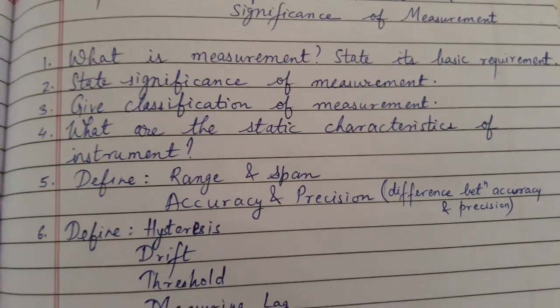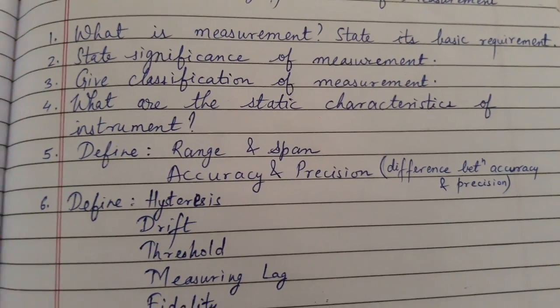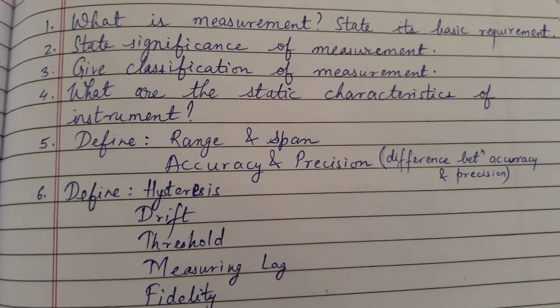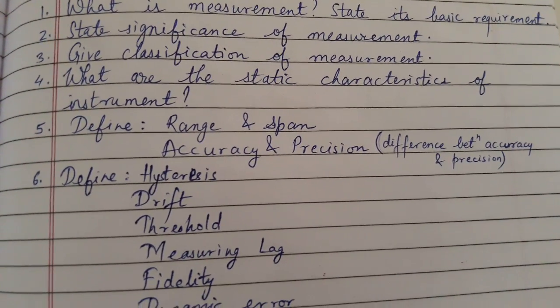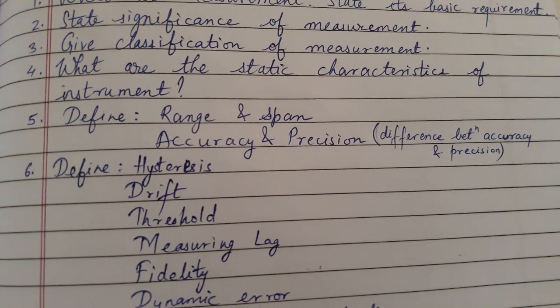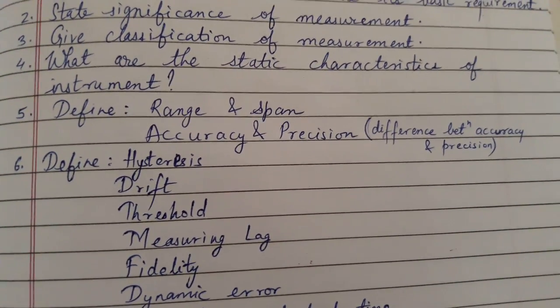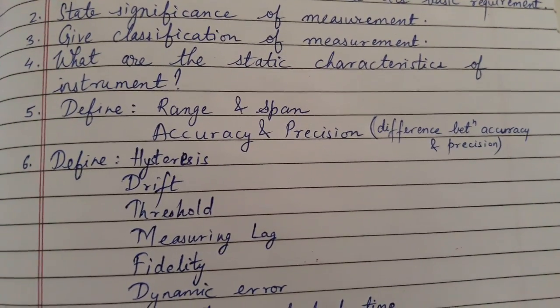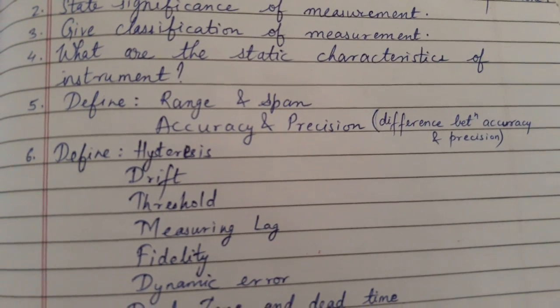What are the static characteristics of an instrument? Define range and span. Define accuracy and precision. The difference between accuracy and precision can also be asked.